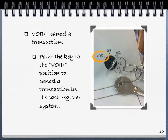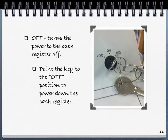In void mode, you would be canceling a transaction. Point the key to the void position to cancel a transaction in the cash register system. Off turns the power to the cash register off. Point the key to the off position to power down the cash register.